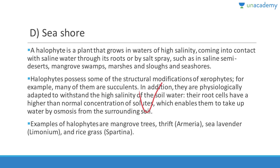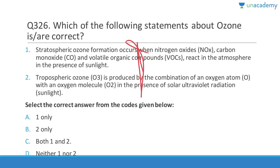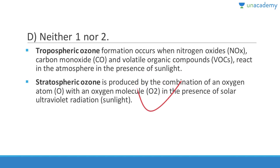Question 326: Stratospheric ozone formation occurs when an oxygen atom combines with an oxygen molecule in the presence of solar ultraviolet radiation — NOT through NOx and CO reactions. Tropospheric ozone formation occurs when NOx, CO, and volatile organic compounds react in the atmosphere in the presence of sunlight. The two statements given have these reversed, so answer is D (neither 1 nor 2).